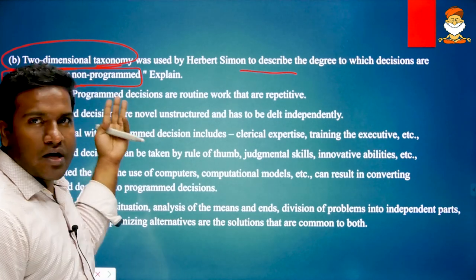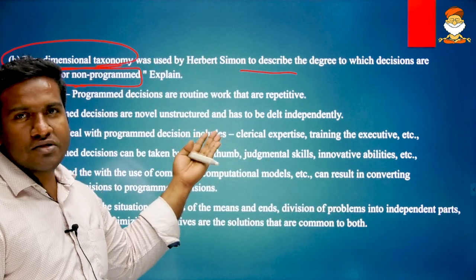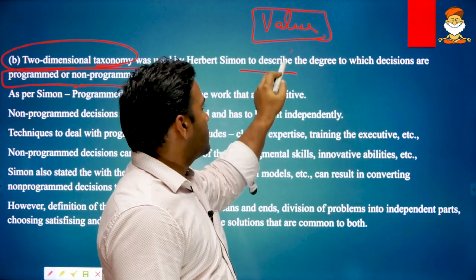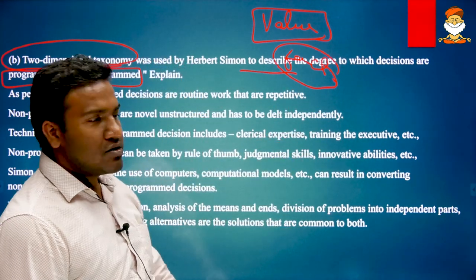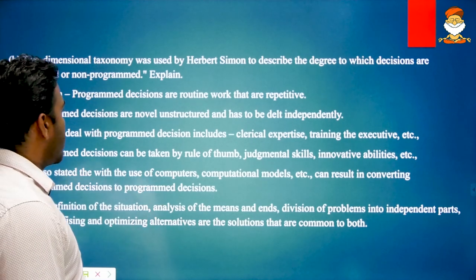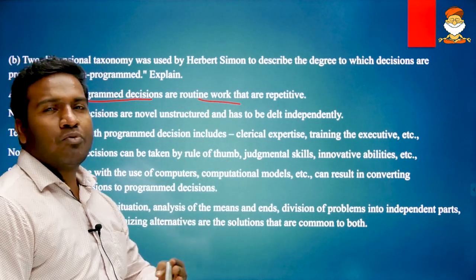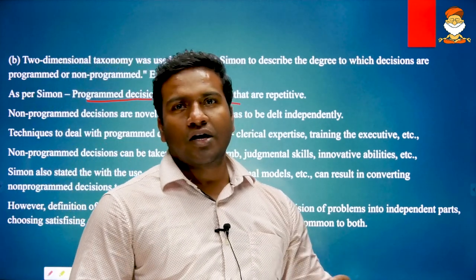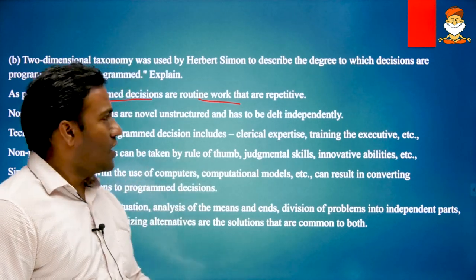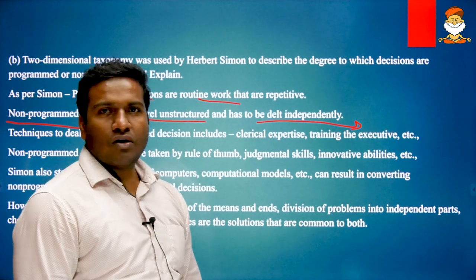The taxonomy used by Herbert Simon is values and facts. We will see to what extent decisions should be programmed and to what extent non-programmed. As per Simon, programmed decisions are routine work that are repetitive — here mostly facts prevail and we need not induce value systems every time; for day-to-day business it goes as per plan and predictions. Non-programmed decisions are novel, unstructured, and must be dealt with independently — these are the ones where value sets in.